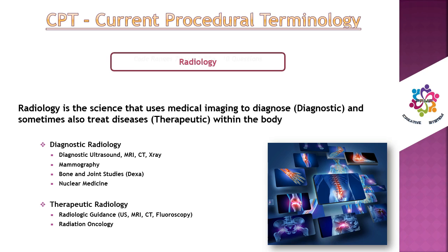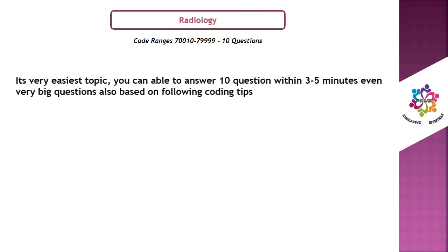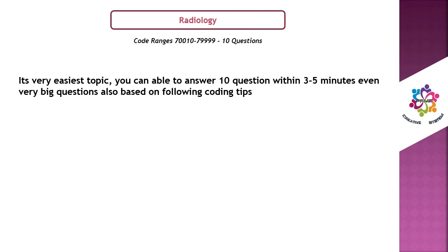The code ranges start from 70010 to 79999. In the CPC exam, you may expect around 10 questions on radiology. It's a very easy topic — you can answer all 10 questions within 3 to 5 minutes, even for very big questions, based on the following coding tips.